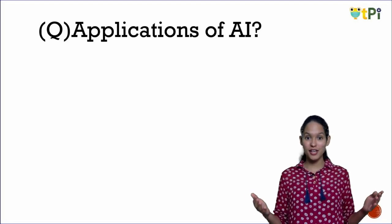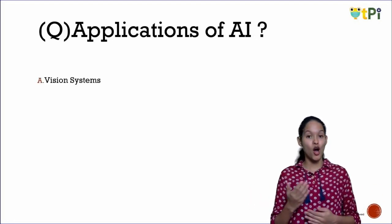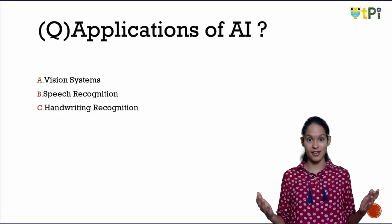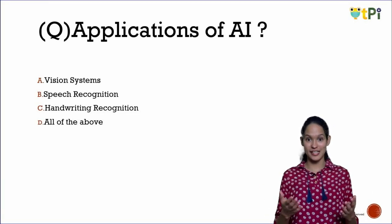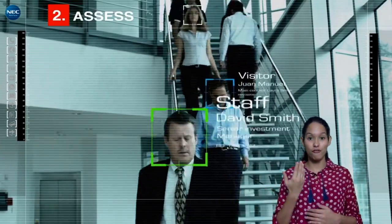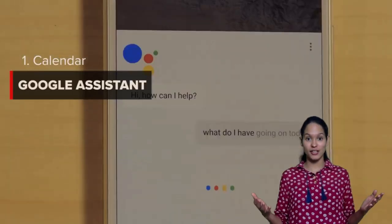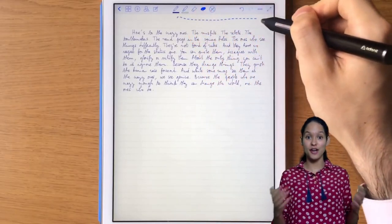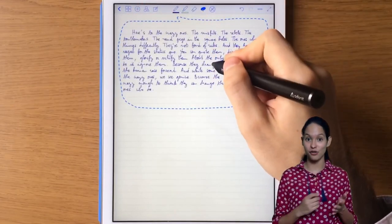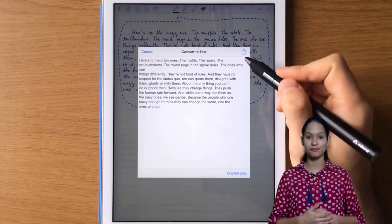Here are a few more AI applications: Option A — vision systems; Option B — speech recognition; Option C — handwriting recognition; Option D — all of the above. It's Option D. Vision systems means facial or image recognition, which sometimes helps you unlock your phone. Speech recognition is Google Assistant or Siri. Handwriting recognition software recognizes your handwriting on paper and converts it into editable text — all of which are AI tools.